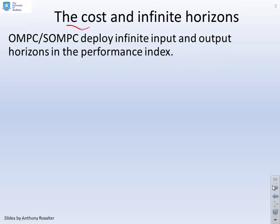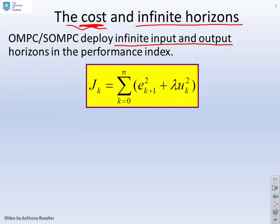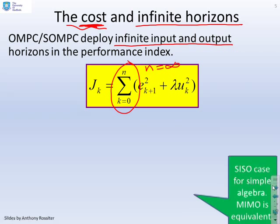What we're going to do is we're going to look at the cost function and infinite horizons. We're not going to calculate closed-loop poles and try and find a link between pole positions and horizons. Instead, we actually look at the cost function. OMPC and SOMPC deploy infinite input and output horizons in the performance index.